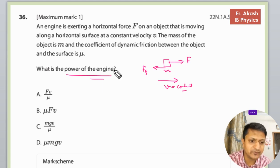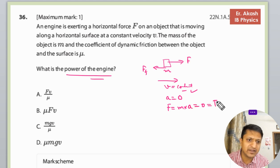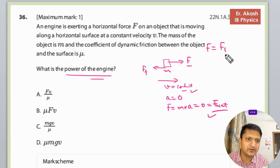We have to calculate power. First of all, when there is constant velocity, the acceleration is 0. When acceleration is 0, then F = ma becomes 0, so F_net becomes 0. When F_net is 0, it means F equals the frictional force, and the frictional force equals μN, where N is mg.